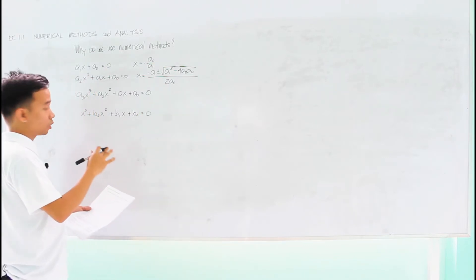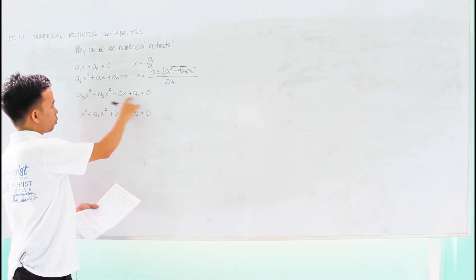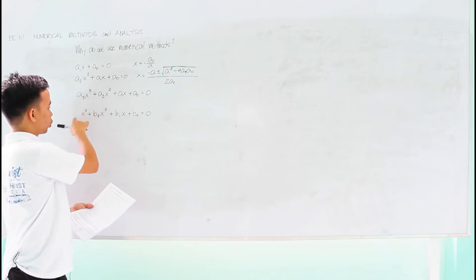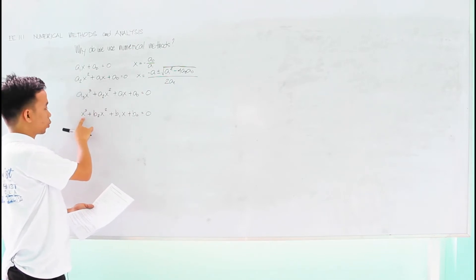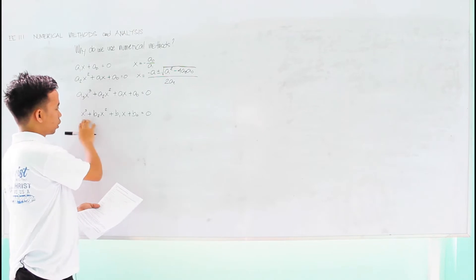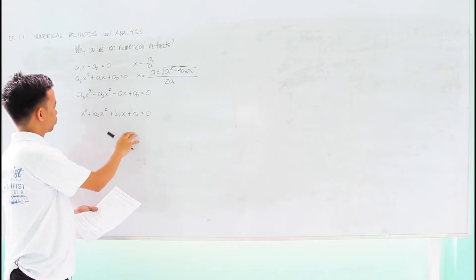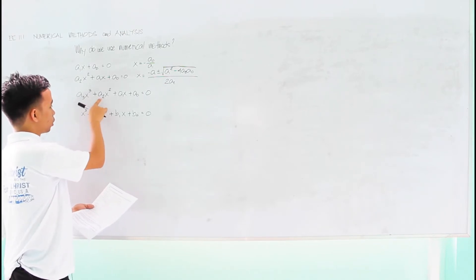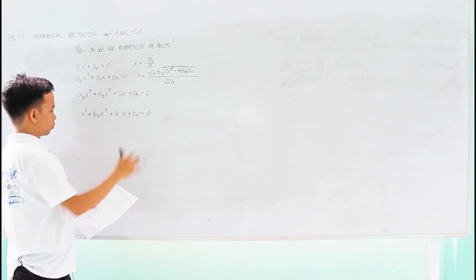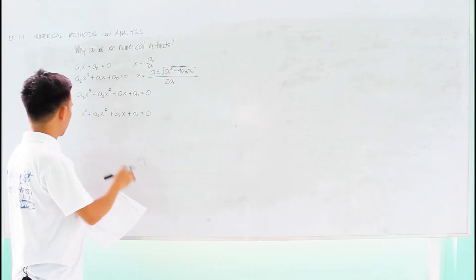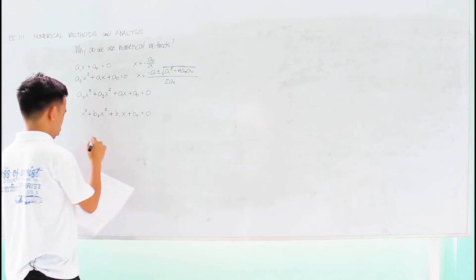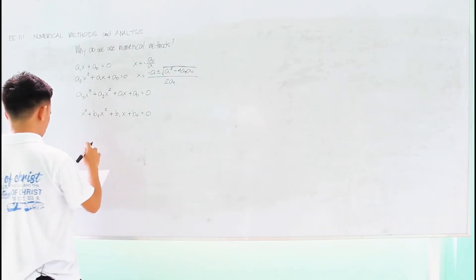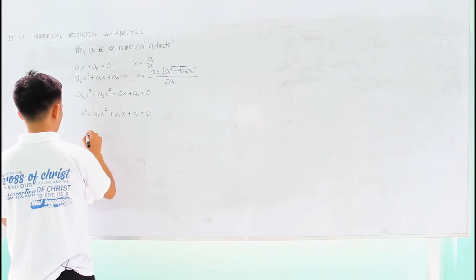Basically, in my research, you just divide all of this with a sub 3, so that you'll have just x cubed, then this one. So b sub 2 here would just be a sub 2 over a sub 3, and so forth. Now, having this cubic equation, you'll find that the solution would be...